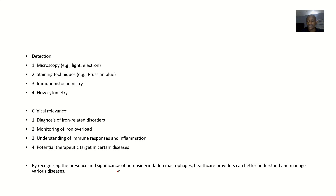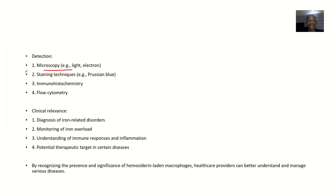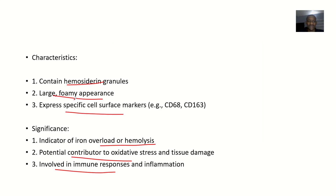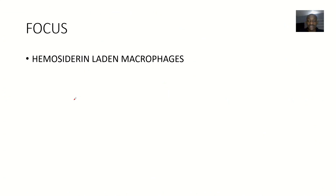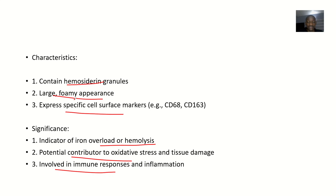For detection, you can identify them using a microscope — all these images I have are microscope slide stains. Detection methods include microscopy, staining techniques, immunohistochemistry, and flow cytometry. The clinical relevance simply refers to the significance discussed above. So that's it for hemosiderin-laden macrophages: definition, causes, functions, characteristics, and clinical significance.